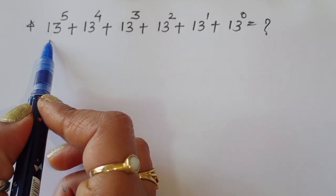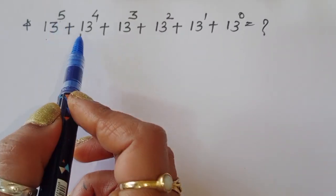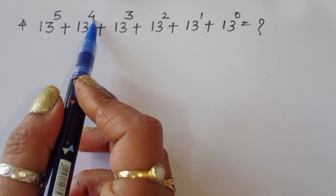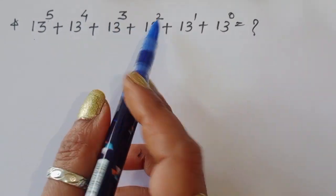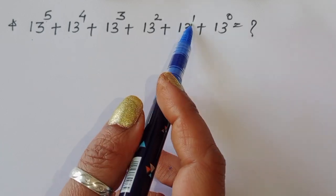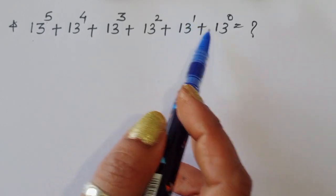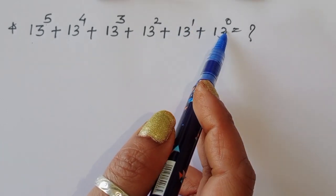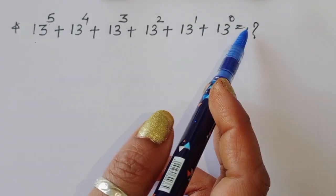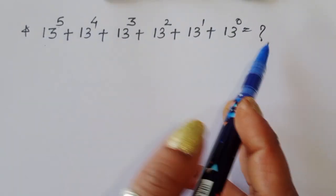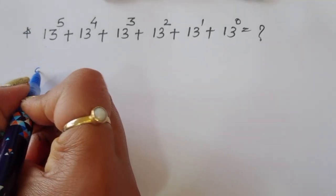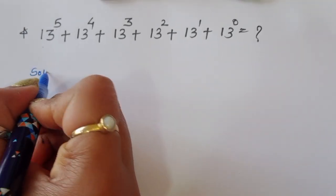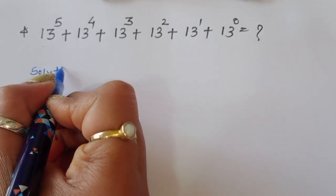The question is: 13 power 5 plus 13 power 4 plus 13 power 3 plus 13 power 2 plus 13 power 1 plus 13 power 0 is equal to what? We have to find out the value of this expression. Let's see the solution.